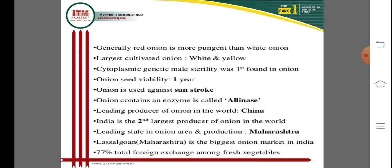Onion is used against sunstroke. Sunstroke is caused by high temperature in open field areas, and it is controlled by onion juice. Onion also contains enzymes called allinase. The leading producer of onion in the world is China, with more than 70 percent of production.